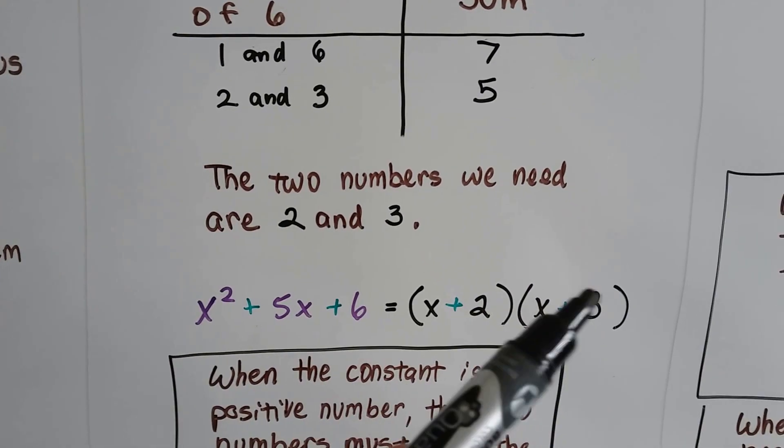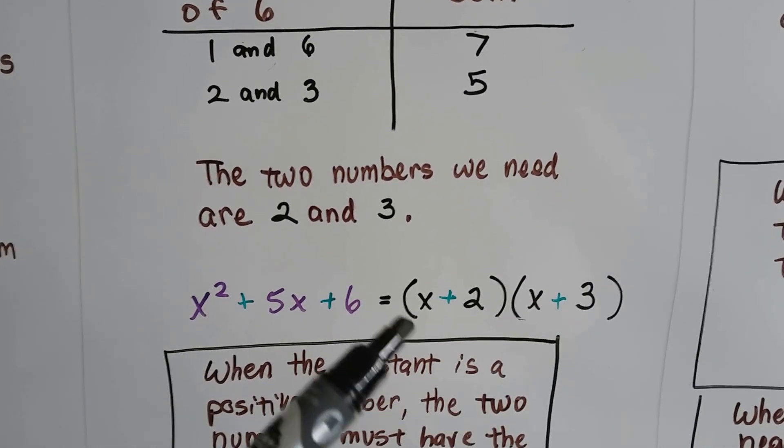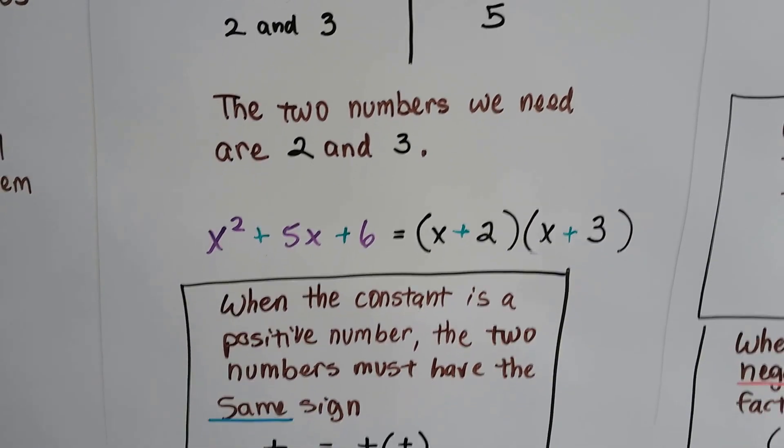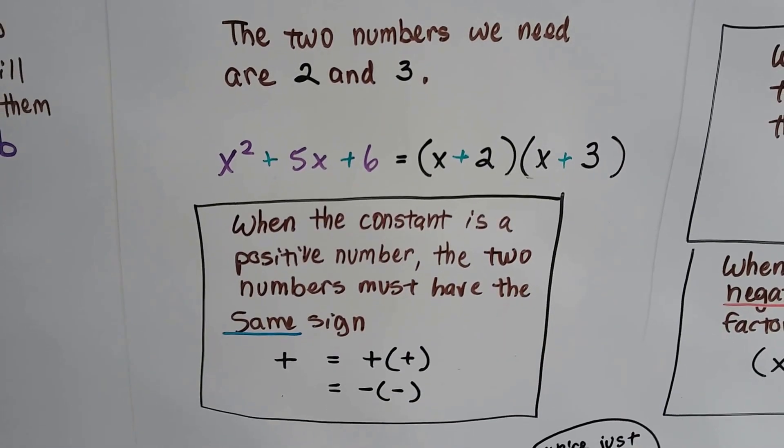All we have to do is write the two parentheses sets with the x in the front, and our plus sign, and put the 2 and 3 in, and we're done. The two numbers we needed were 2 and 3, isn't that easy?